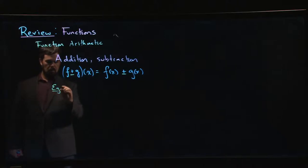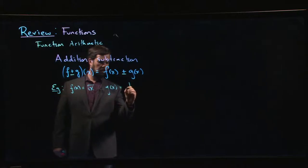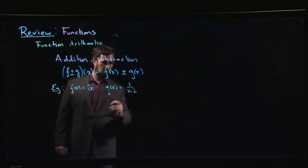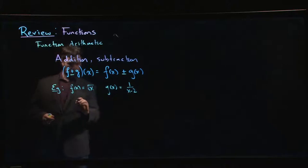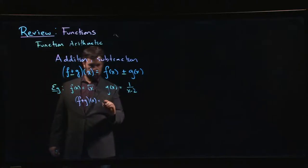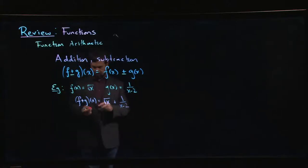So for example, if f of x was something like the square root of x and g of x is something like 1 over x minus 2, and I want to calculate f plus g, well, it's just f of x plus g of x. So it's root x plus 1 over x minus 2. Simple enough.